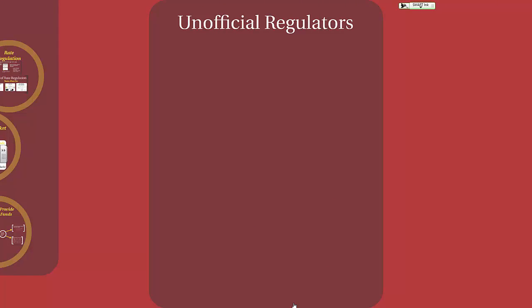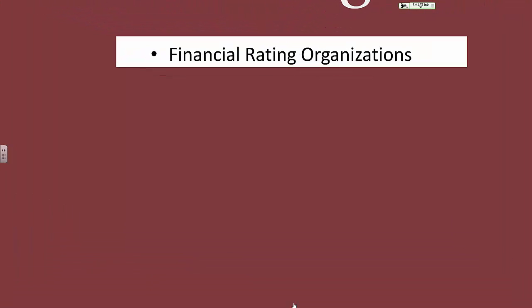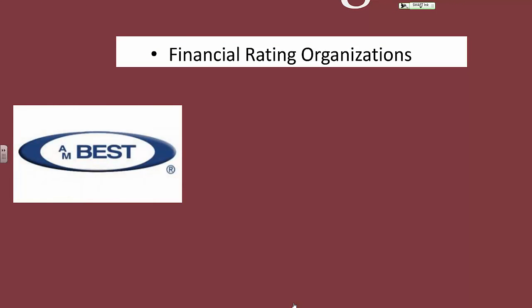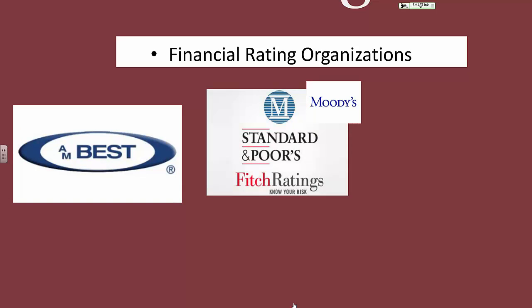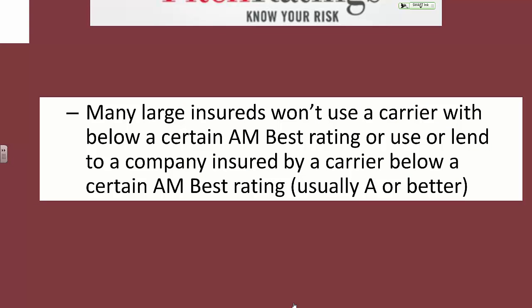Last, let's talk about unofficial regulators of the insurance business. We'll start with financial rating organizations. Financial rating organizations have a significant impact on the operations of insurance companies. The most significant is probably AM Best. Moody's, Standard & Poor's, Fitch Ratings, Duff & Phelps, and Weiss Ratings also all provide ratings of insurance companies. They monitor insurers' solvency potential and financial strength overall. Many large insureds won't use a carrier with below a certain AM Best rating, and many insurance brokers won't work with a company that has below an A rating. Reinsurers will always look at these ratings as well.